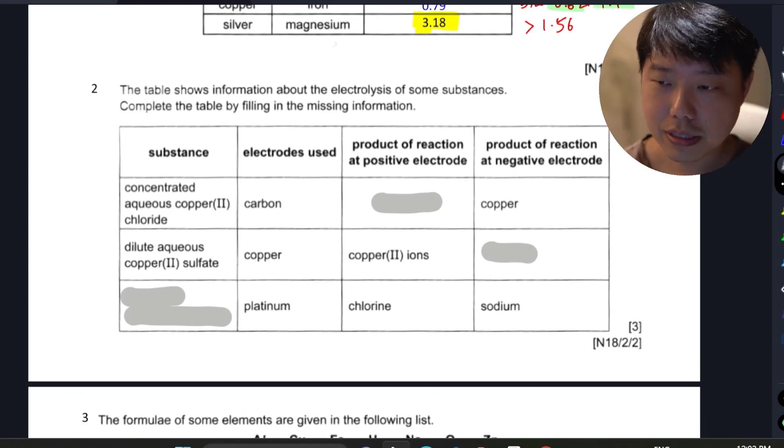Hi everybody, so this is another 10-year series question that I went through with my class. This table summarizes the preferential discharging of different elements from electrolysis. I think it's pretty good practice for all of you.